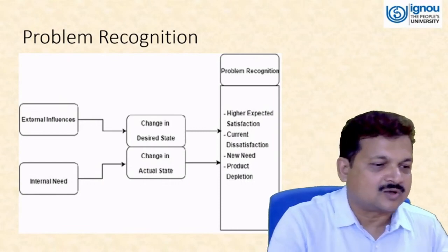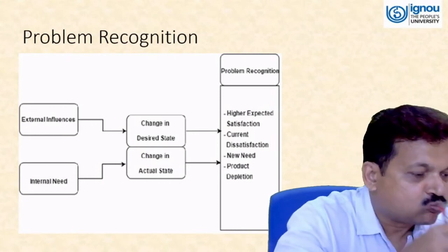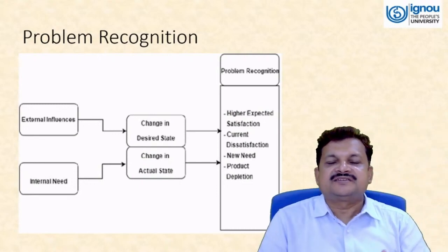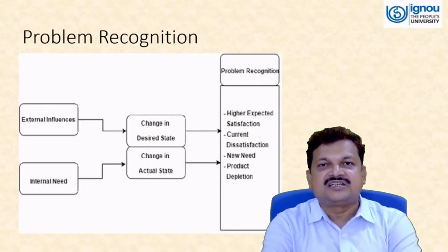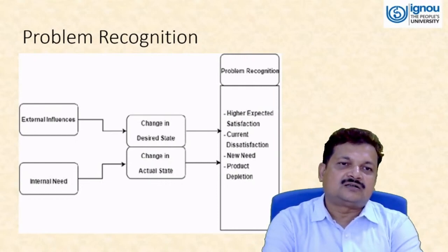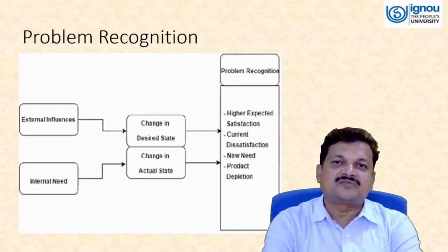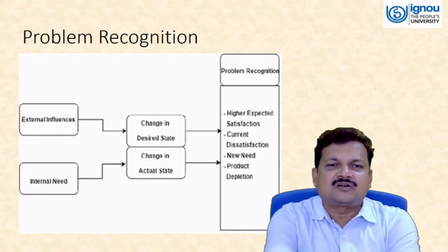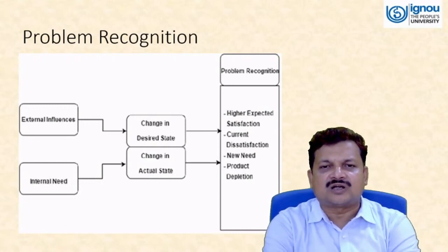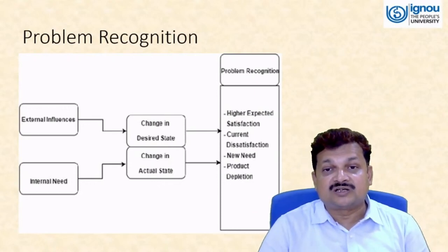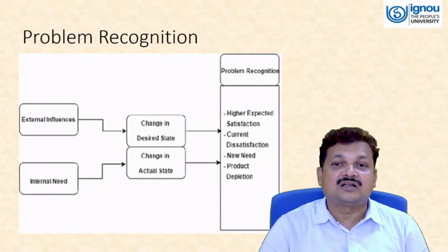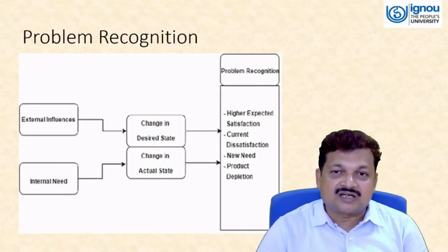A third cause is new need — you have not purchased a particular product before and now you are going to purchase it for the first time. For example, you have a bike and now plan to buy a car, or you don't have a cell phone and are purchasing one for the first time. This is a new need being created, and it is also a form of problem recognition.